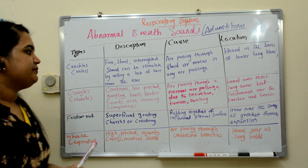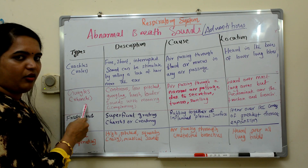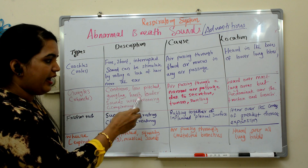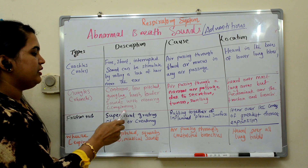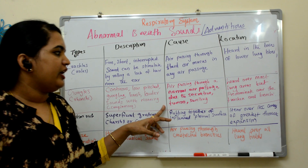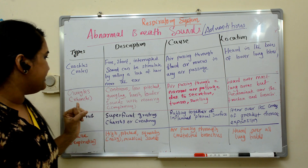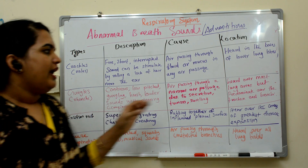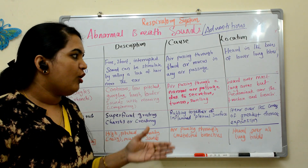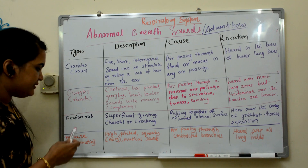The second adventitious sound is gurgles, also called rhonchi — a continuous, low-pitched, gurgling, harsh, and louder sound with a moaning quality. It is caused by air passing through a narrow air passage due to secretions, tumors, or swelling. It is heard over most lung areas but is predominant over the trachea and bronchi.